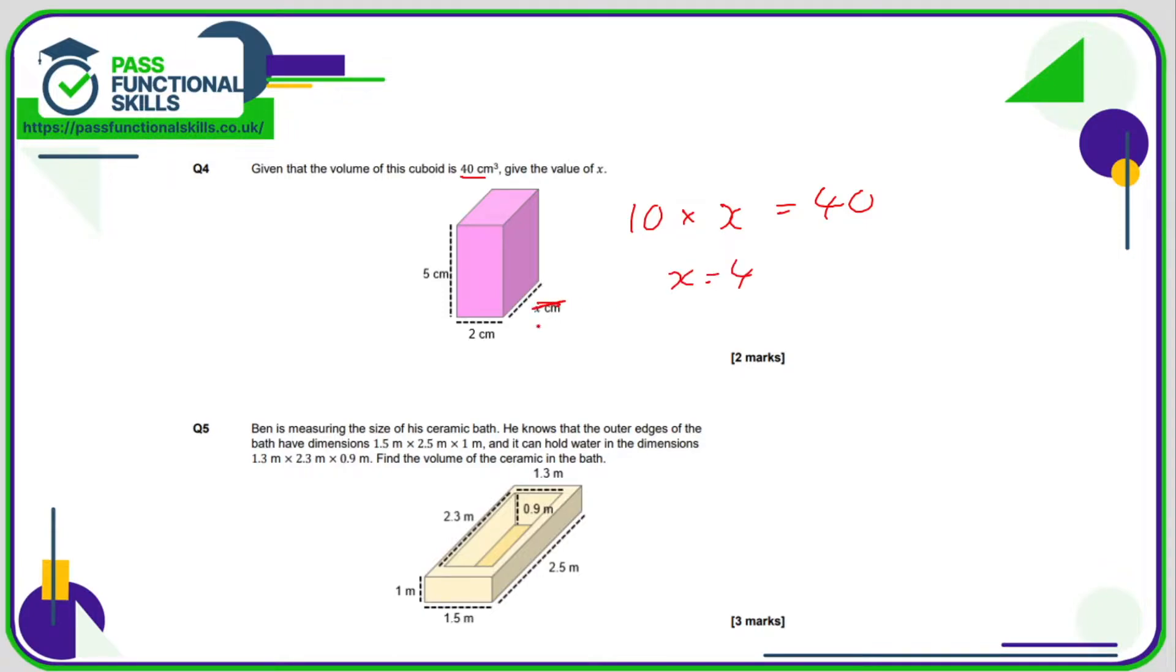Let's just test this out. 5 times 2 is 10, 10 times 4 is 40, yes it works. Question number five, what we need to do is work out the volume of the ceramic. What I would suggest is work out the volume as if this was a solid shape, and then subtract the volume of the bit that's been cut out.